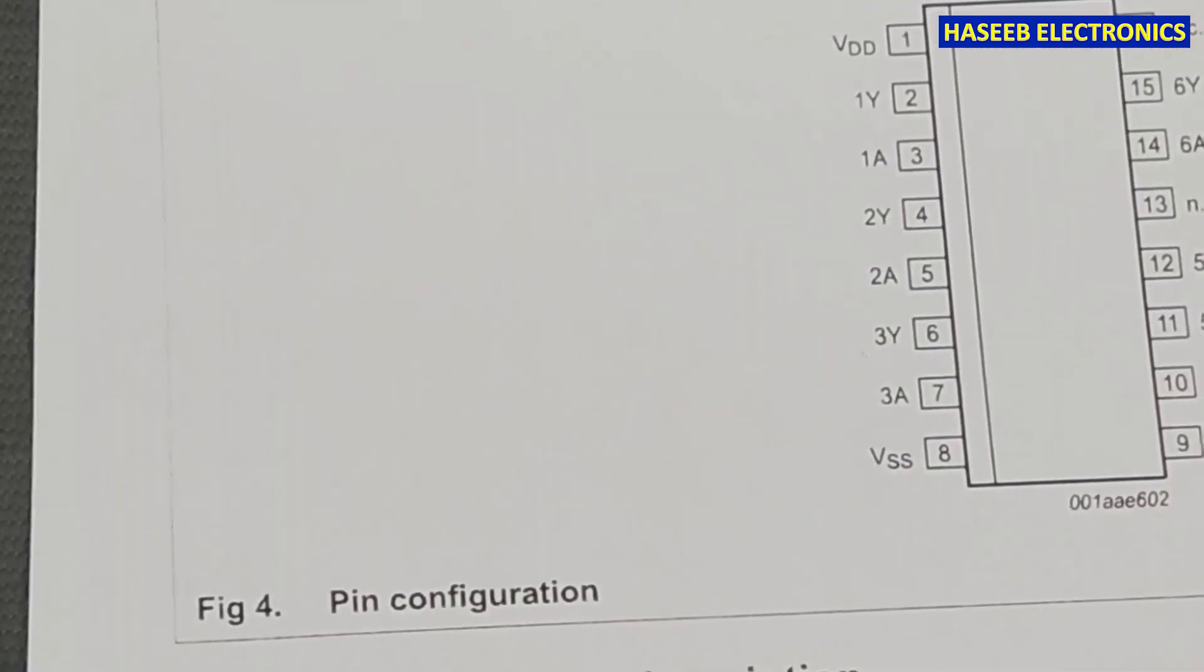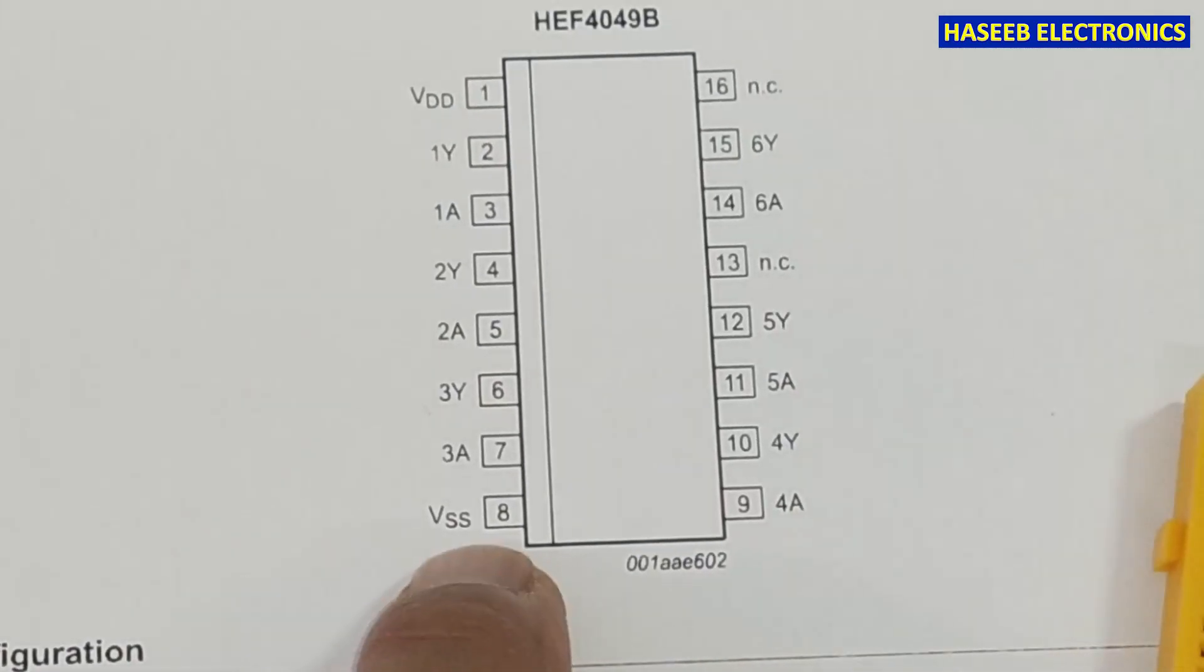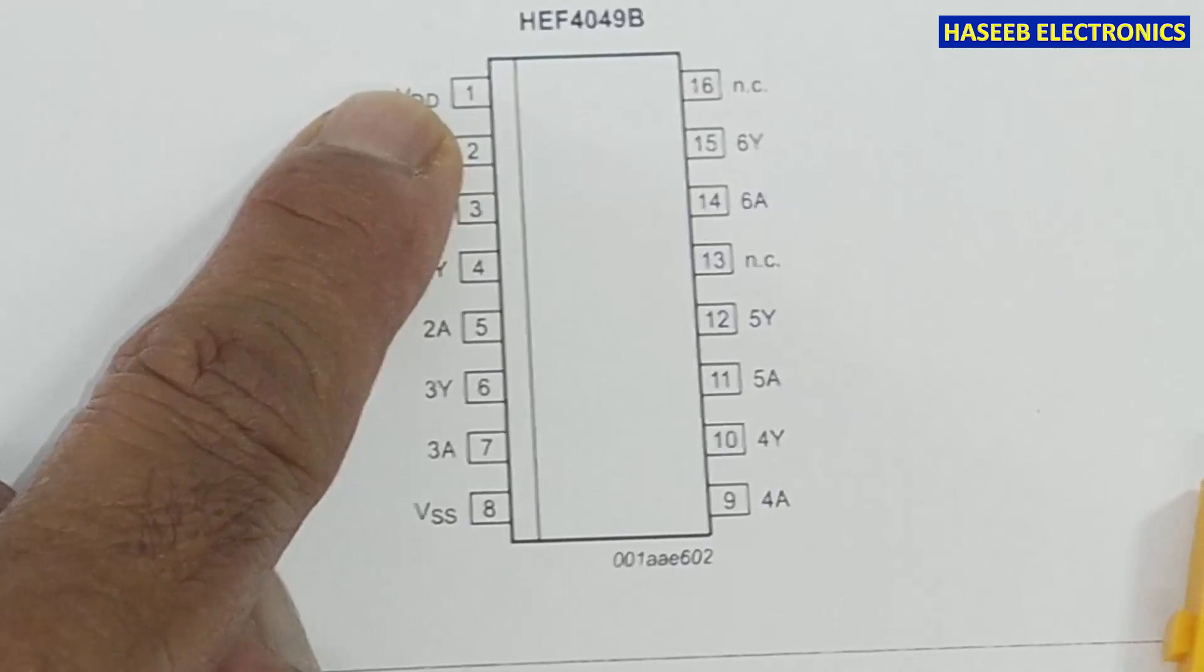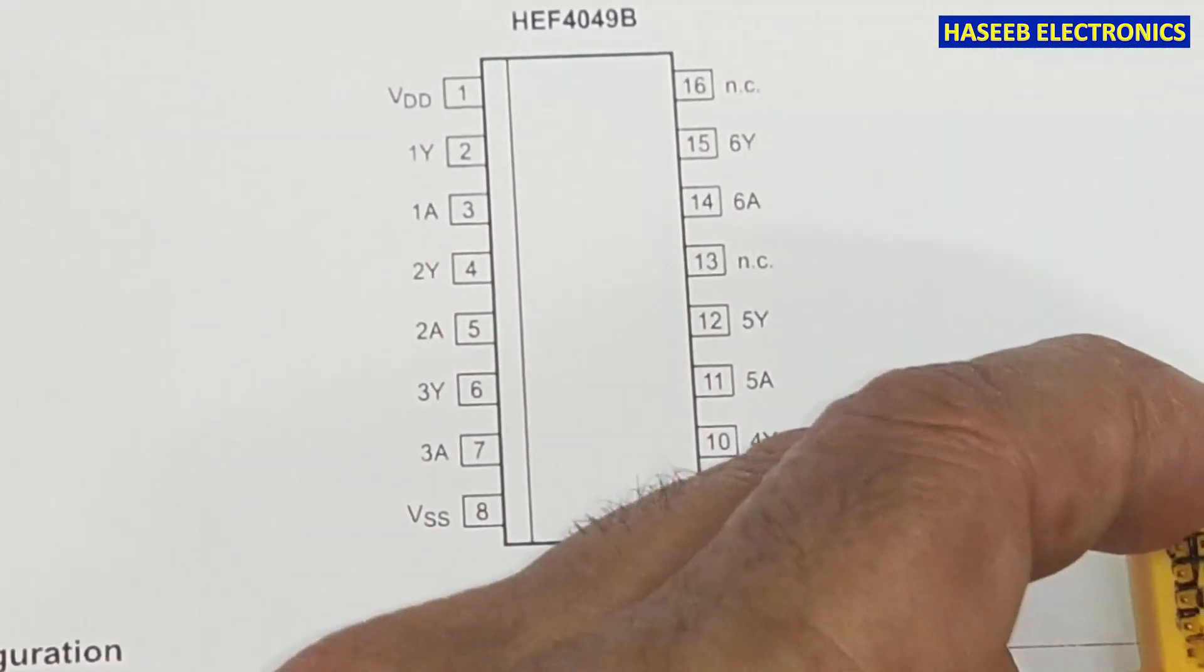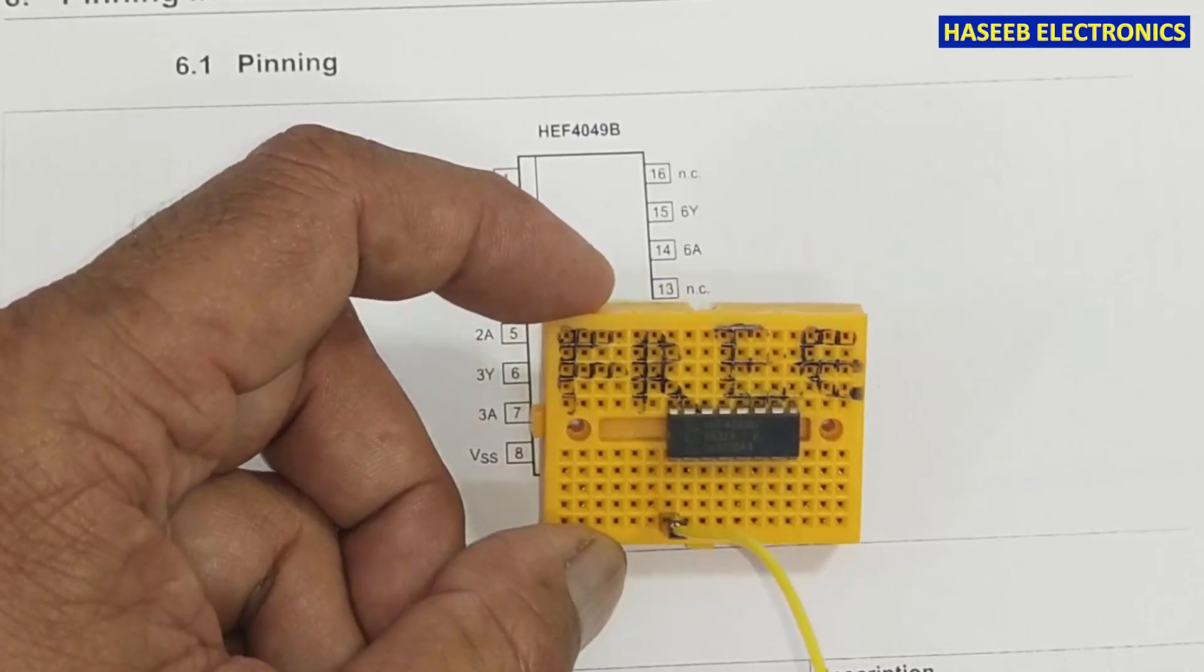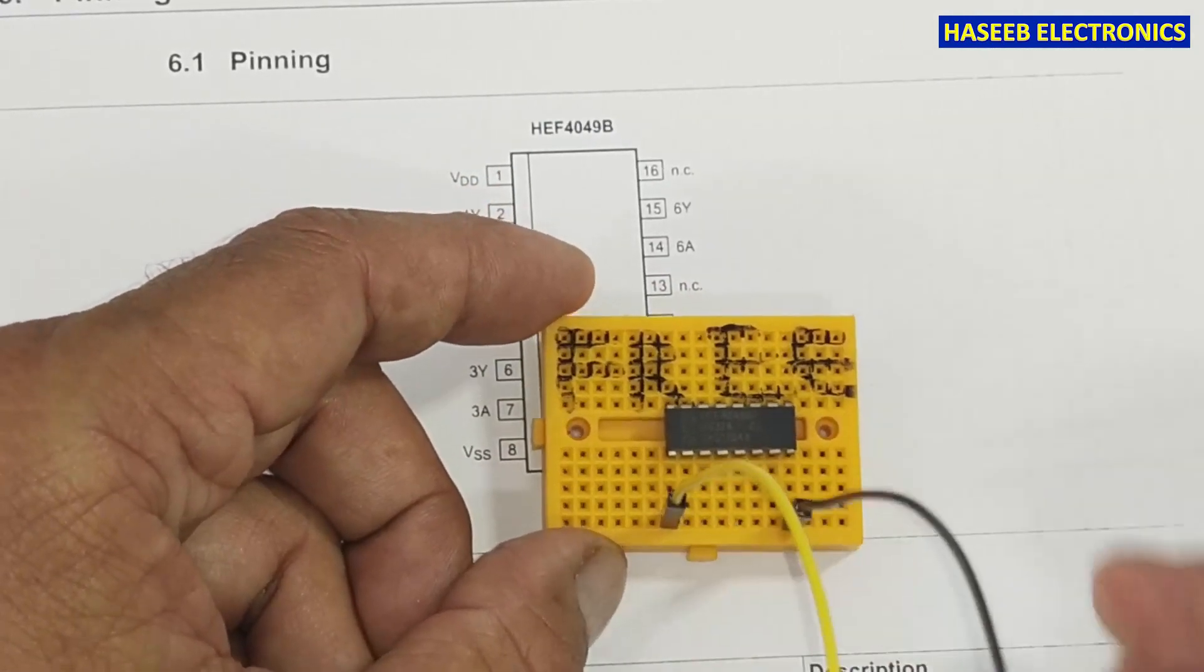If we see its pinout, pin 8 is VSS, that is the ground pin. Pin 1 is supply voltage VDD. We will apply VDD here, that is 12 volts, and pin 8, the last pin, is ground.